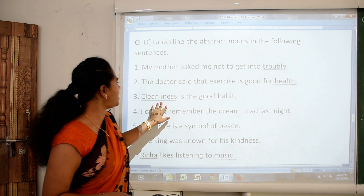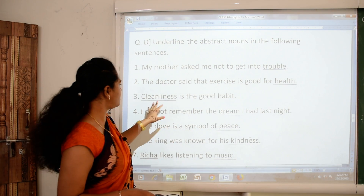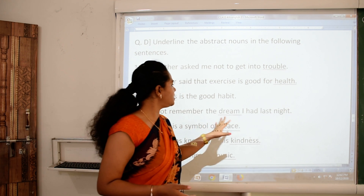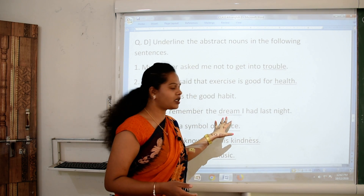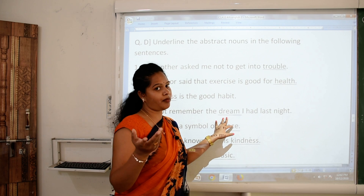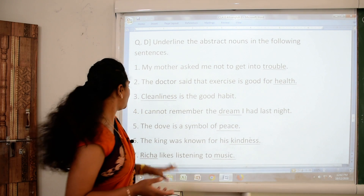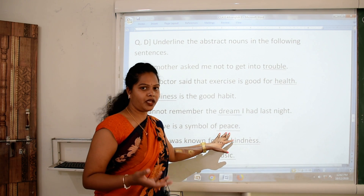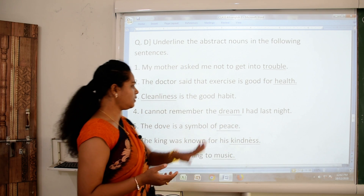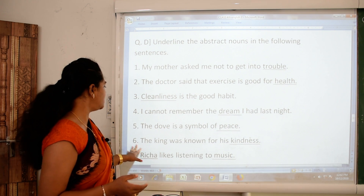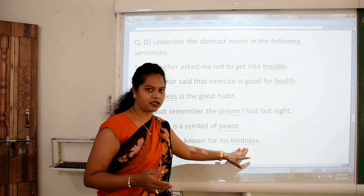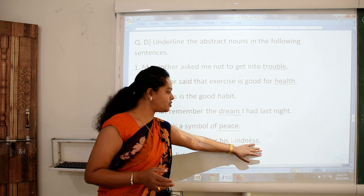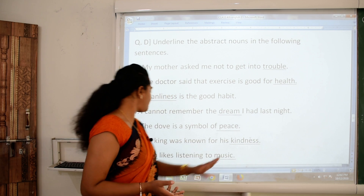Third: 'Cleanliness is a good habit.' The word cleanliness is an abstract noun. Number four: 'I cannot remember the dream I had last night.' Can you touch the dream? Of course not. You can only think about it. So the word dream is an abstract noun. Fifth: 'The dove is a symbol of peace.' The word peace — you can feel or think about it — so peace is an abstract noun. Number six: 'The king was known for his kindness.' You cannot touch or smell kindness — you can only feel it — so kindness is an abstract noun.